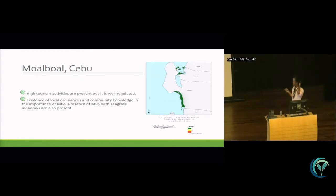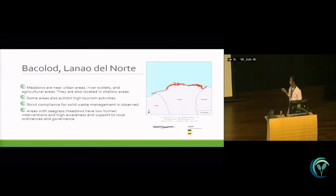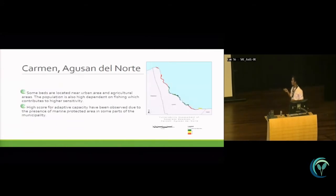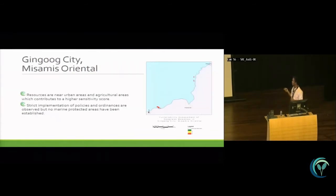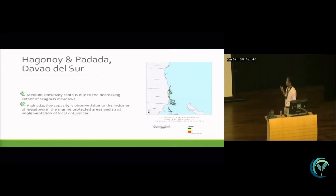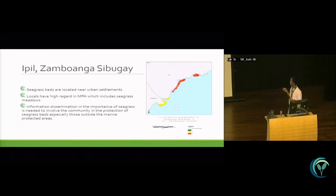In Moalboal, Cebu, even though there is high tourism as it is also a diving spot, it is well regulated, giving it a low vulnerability score. In Bacolod, the areas are near agriculture and urban areas, resulting in a high vulnerability score. In Carmen and Nungaog, they are similarly near urban areas and agricultural areas. In Davao, there is medium sensitivity because of decreasing seagrass extent, but strict implementation of marine protected areas that include seagrass meadows helps. In Zamboanga, proximity to coastal settlements results in high vulnerability.